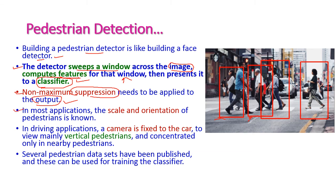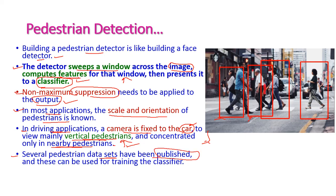Non-maximum suppression is applied to the output. In most applications, the scale and orientation of the pedestrian is known — if pedestrians are close to the car, their size appears large; at long distance, the size is small. In driving applications, the camera is fixed in the car and can view many upright pedestrians, concentrating on nearby ones. Several pedestrian datasets are already published and available on the internet, and these datasets can be used to train a classifier to build a pedestrian detection application.